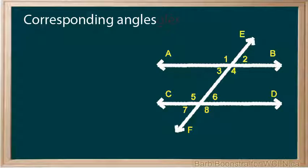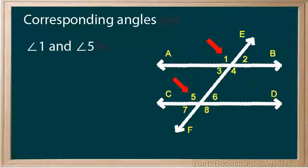Corresponding angles are pairs of angles that occupy corresponding positions. Angle 1 and angle 5 are corresponding angles because they are above the parallel lines and on the same side of the transversal. Angles 2 and 6 are also corresponding angles.